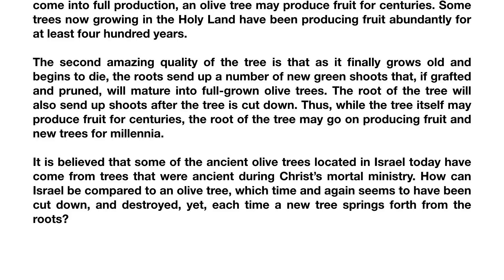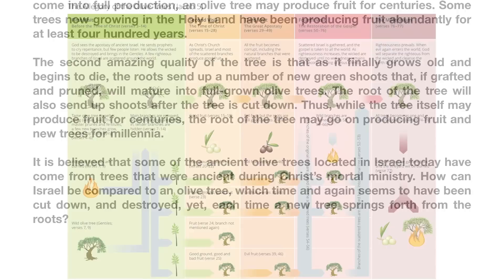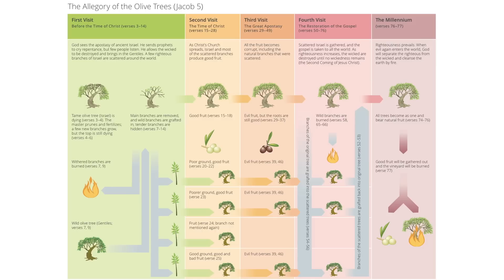How can Israel be compared to an olive tree, which time and again seems to have been cut down and destroyed, yet each time a new tree springs forth from the roots, end quote. In covering the allegory of Zenos in chapter 5, John and I would like to read an abridged version of it, and we'll have some visuals that will help you walk through it. The Come Follow Me manual has provided a PDF document, a chart where they've updated the Institute graphic with much better images, which can be a really good reminder to help you simplify the main elements of the allegory.